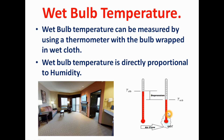The working of this wet bulb temperature is very interesting. When we wrap the wet cloth on the bulb and air comes in contact with this wet cloth, evaporation of the water or moisture takes place from the cloth. Due to this evaporation, a cooling effect is generated on the wet bulb, and due to this cooling effect, the temperature becomes lower than the dry bulb temperature.